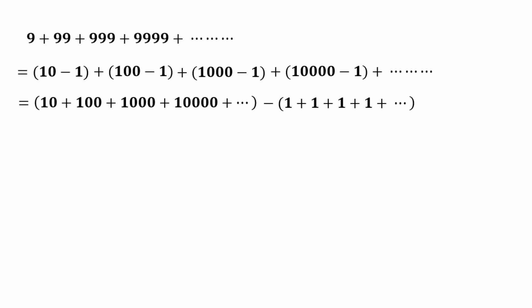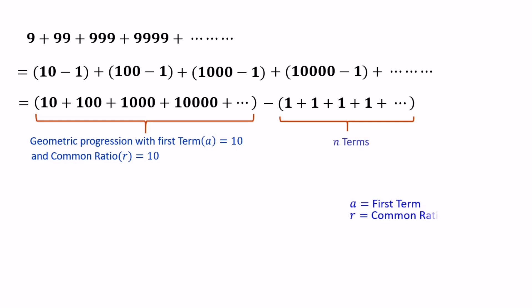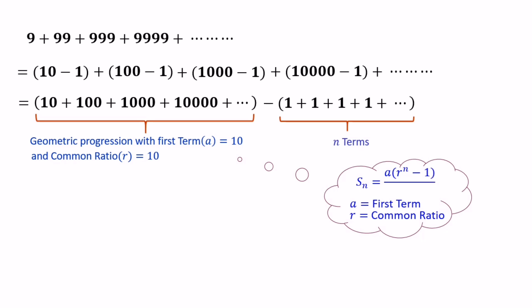The series 10 plus 100 plus 1000 plus 10,000 and so on is a geometric series with first term 10 and common ratio 10. We know the sum of n terms of a geometric progression with first term a and common ratio r can be written as Sn equals a times (r to the power of n minus 1) over (r minus 1).